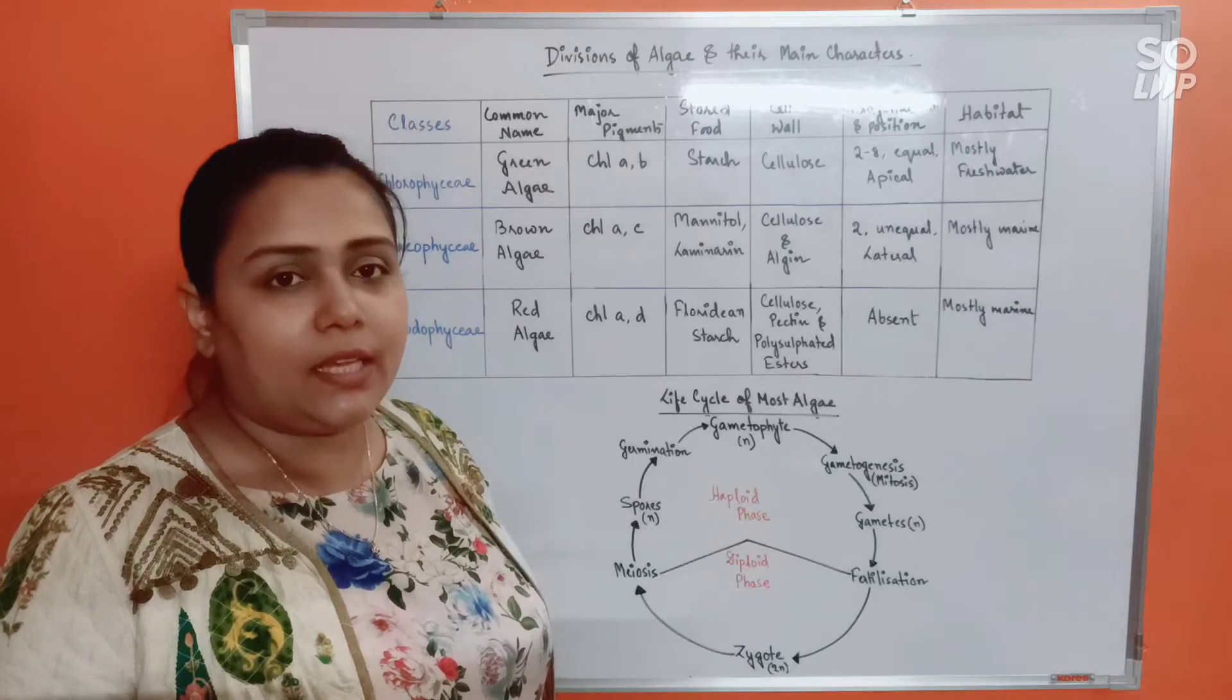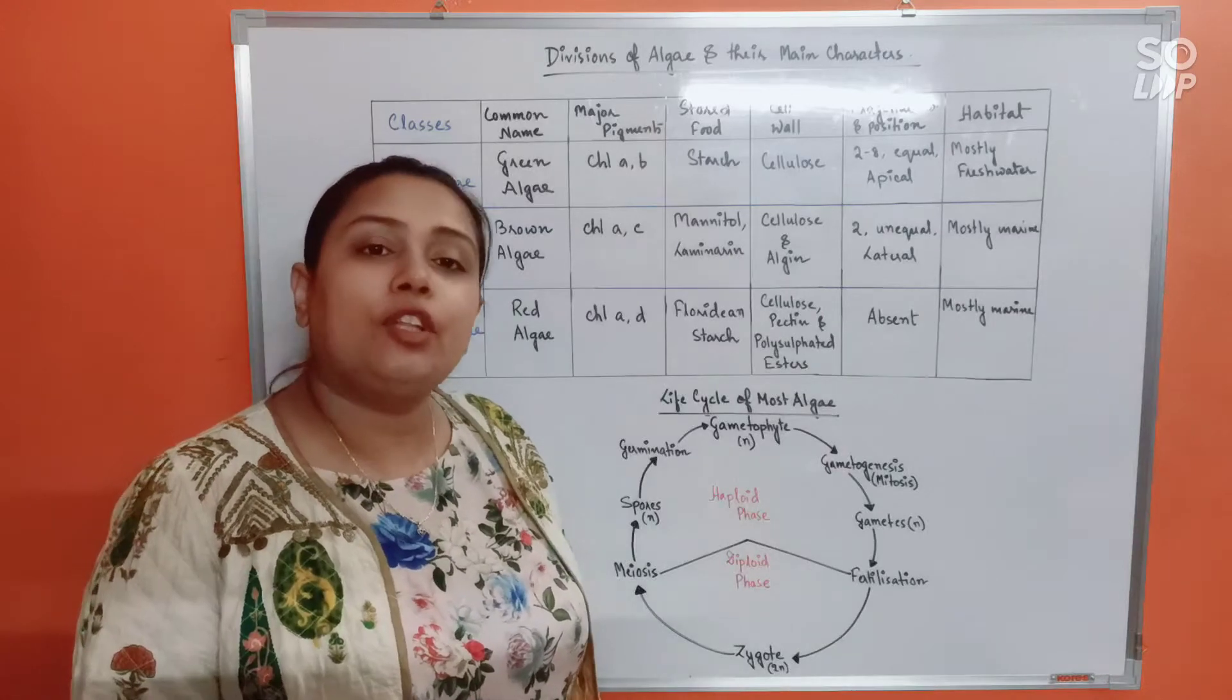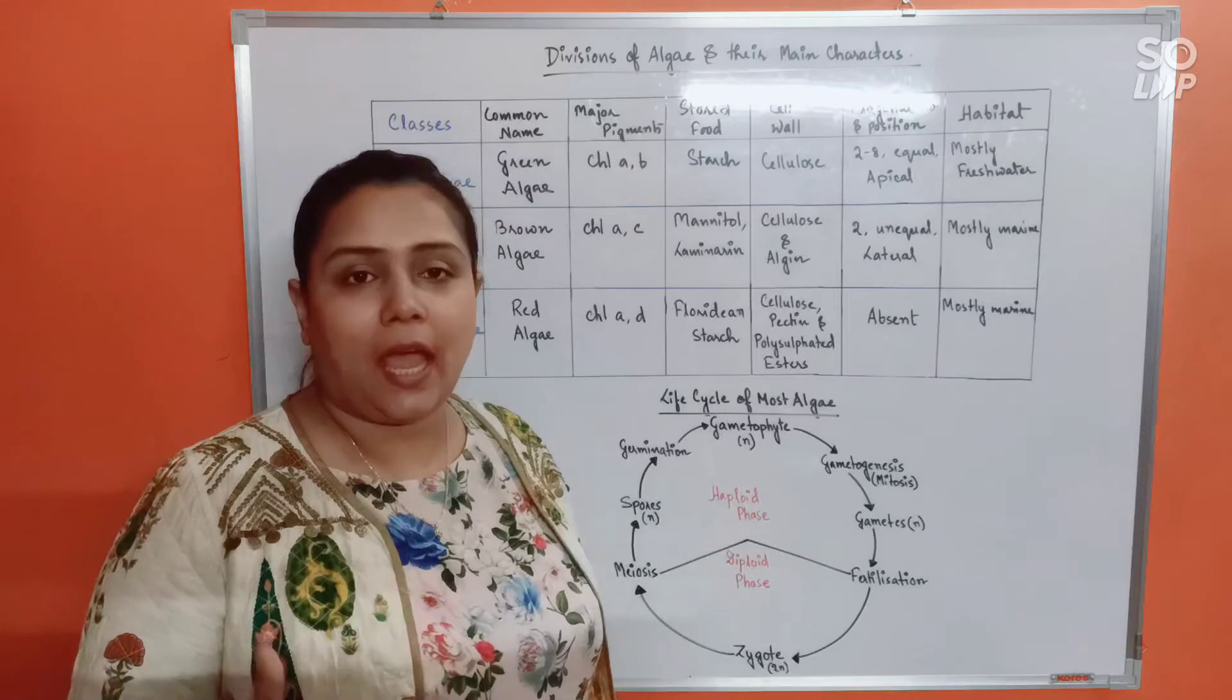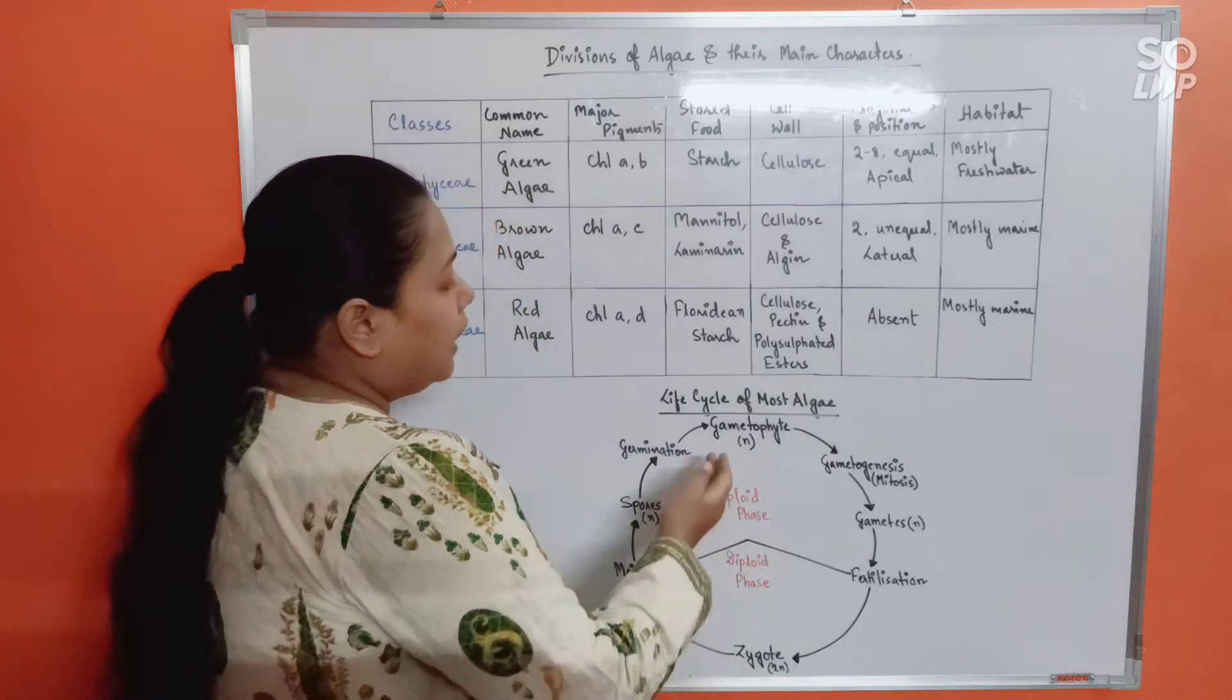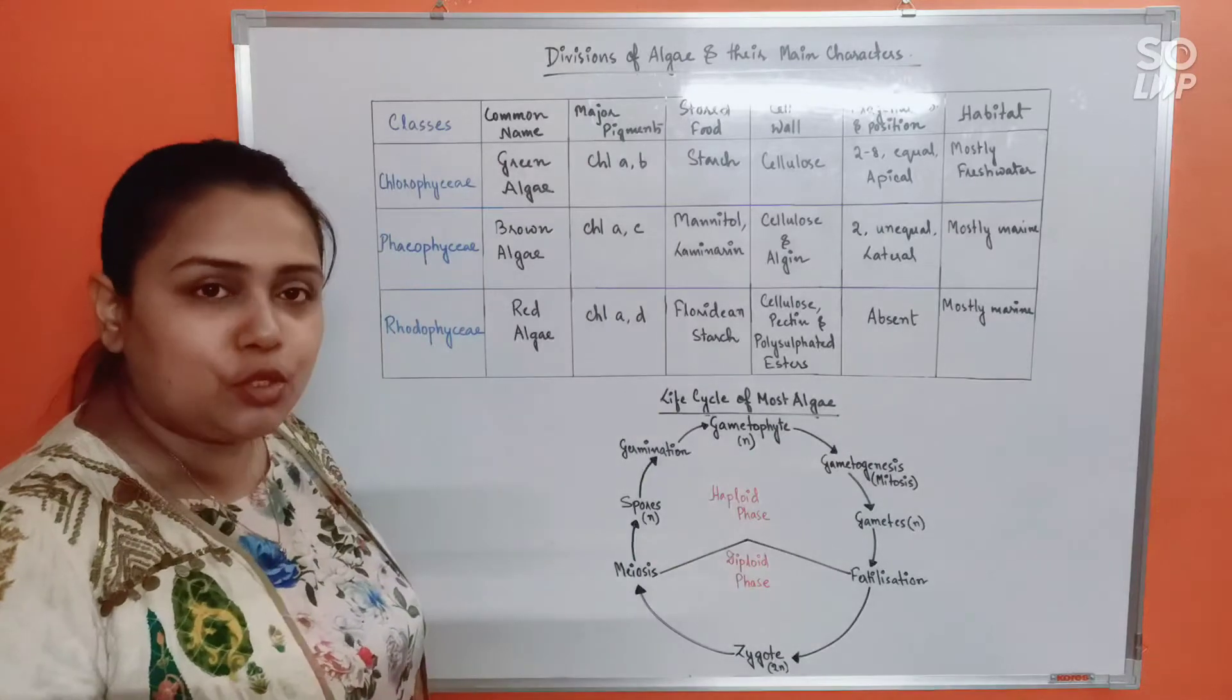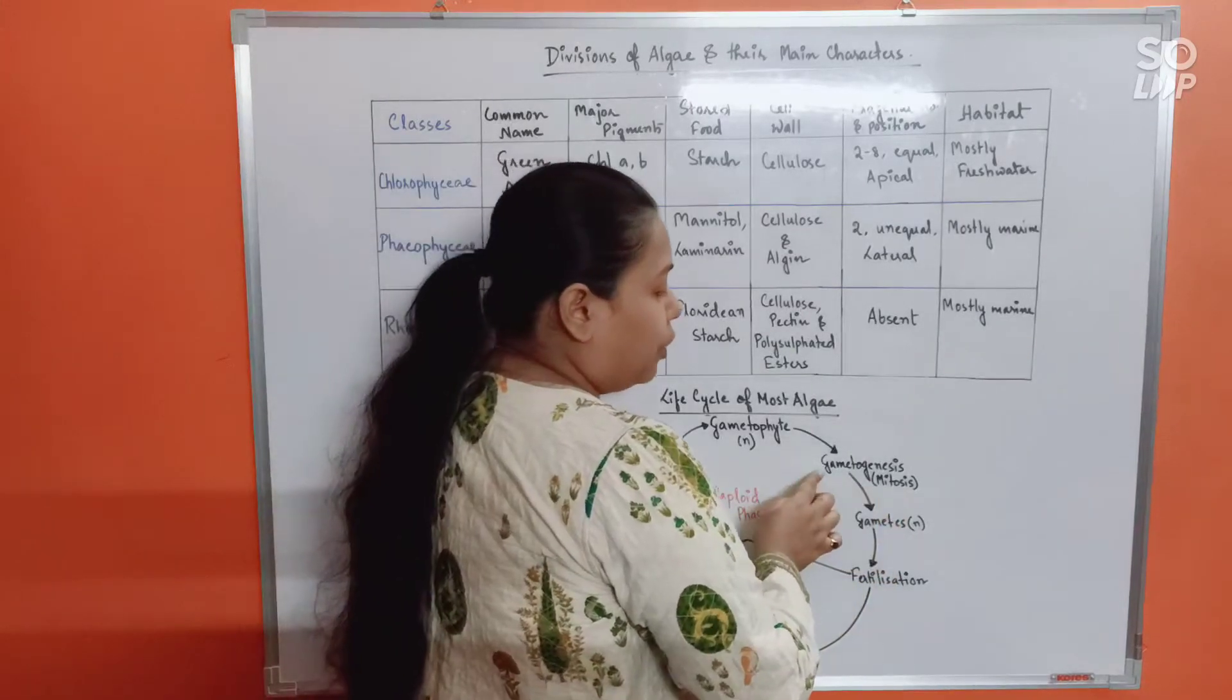In case of algae, which is the most primitive form of plants, for them the main plant body is haploid or gametophyte. So let's see how the life cycle will be occurring in most algae which have haplontic life cycle, means their main plant body being haploid. See, it all begins with the main plant body, that is the gametophyte n. N means haploid, isn't it? So gametophyte which eventually will undergo gametogenesis, means gamete formation. Now every haploid organism will undergo gamete formation by mitosis, so by mitosis they will undergo gametogenesis.